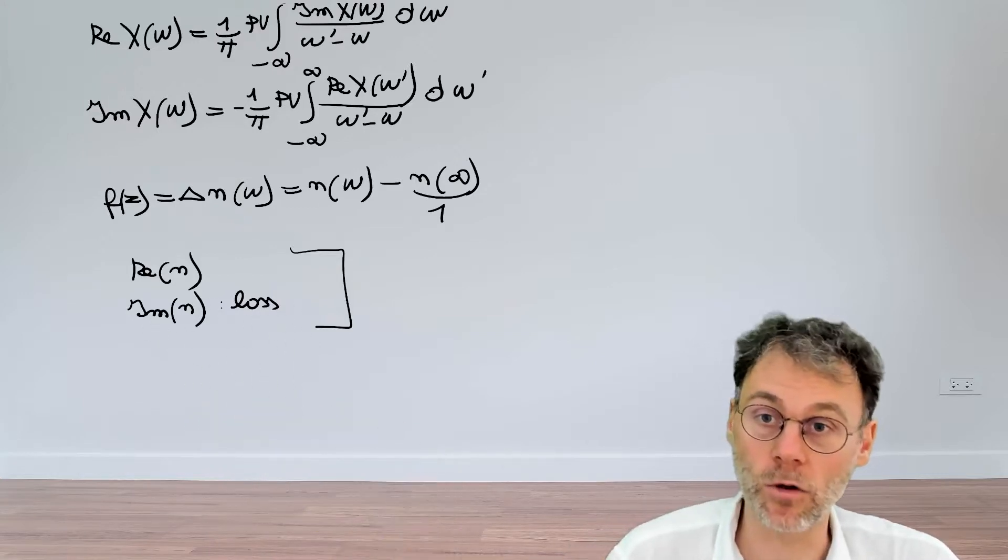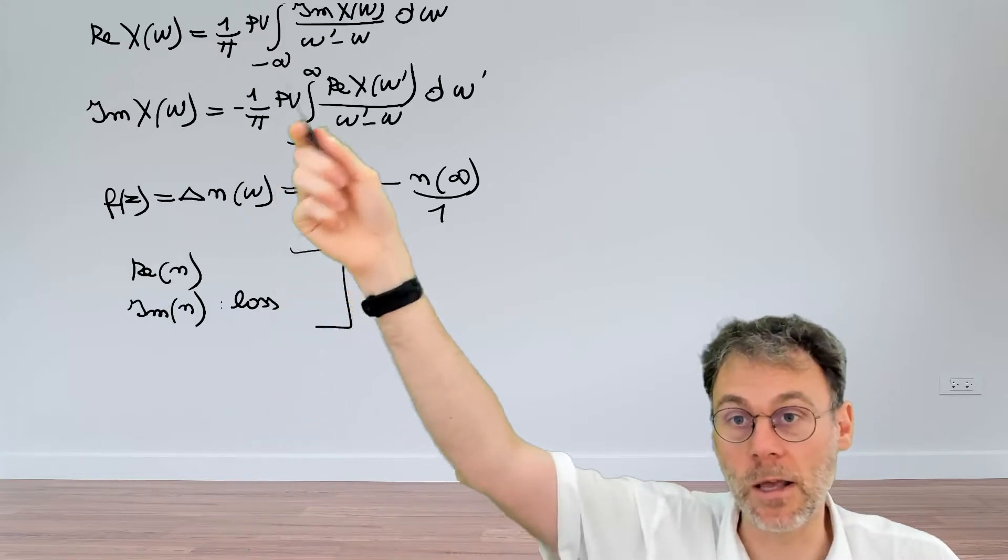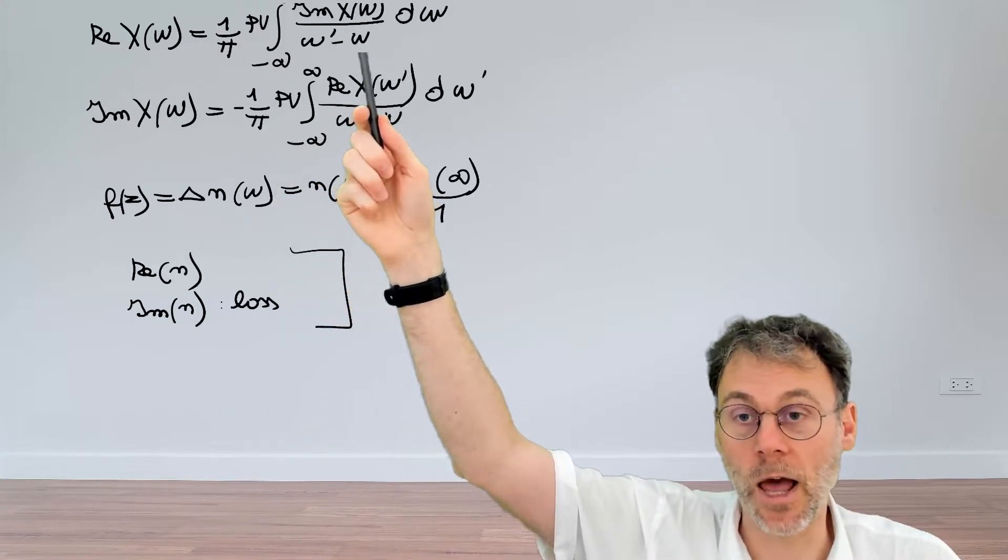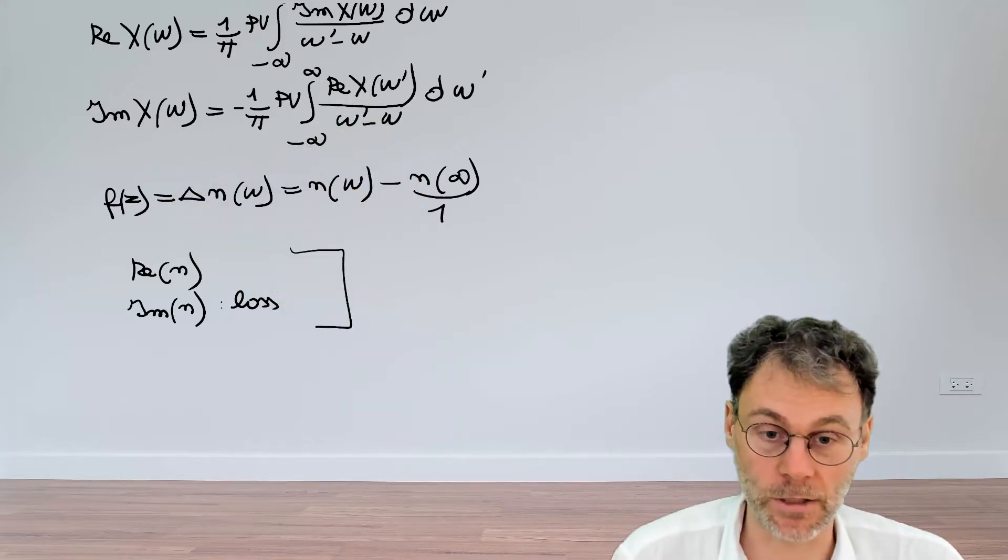Well what you do is you just take your material, you measure the loss as a function of frequency which is typically a little bit easier, you do that for a large number of frequencies such that you can numerically evaluate that integral here, and then you can use Kramers-Kronig to calculate the real part of the refractive index.